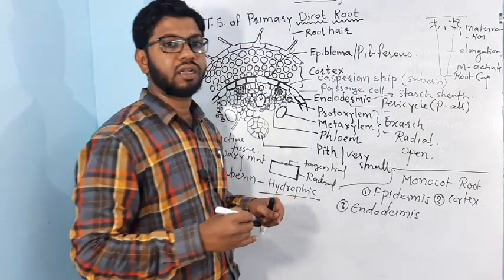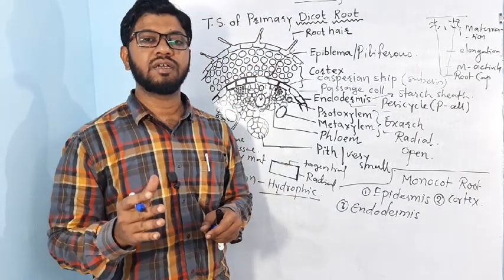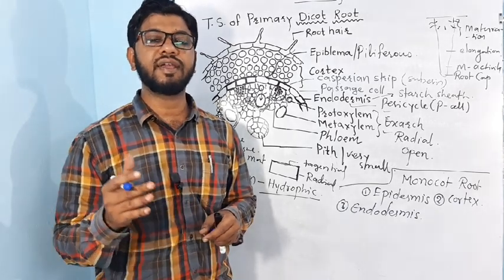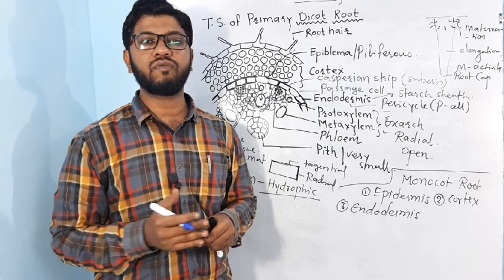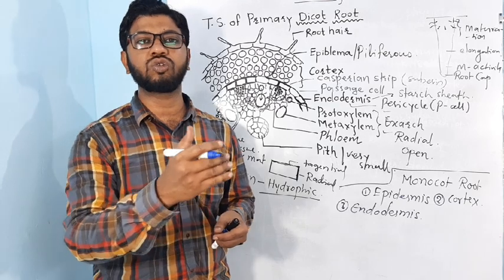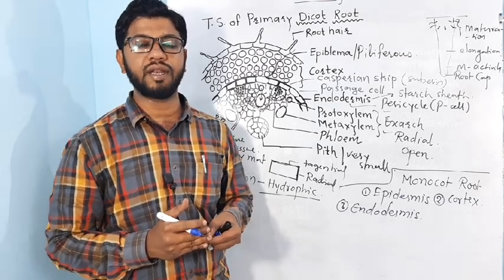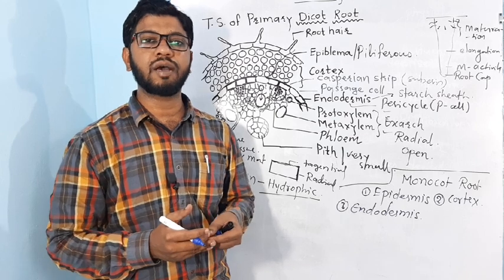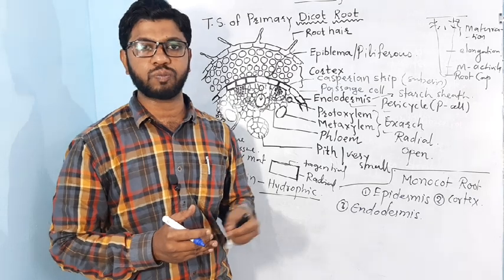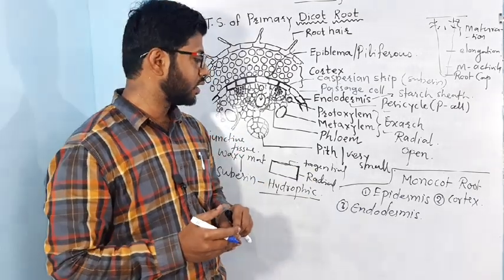contain two types. Some cells have deposition of suberin, forming Casparian strips, and they are impervious or hydrophobic to water. Some cells of the endodermis, just next to the protoxylem, do not have suberin deposition. They lack Casparian strips and are called passage cells, which easily allow water transport from cortex into the protoxylem.